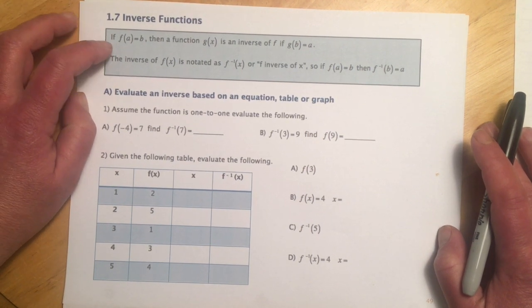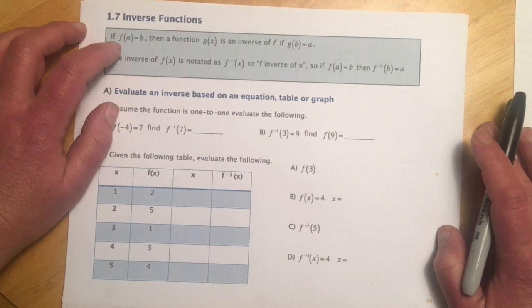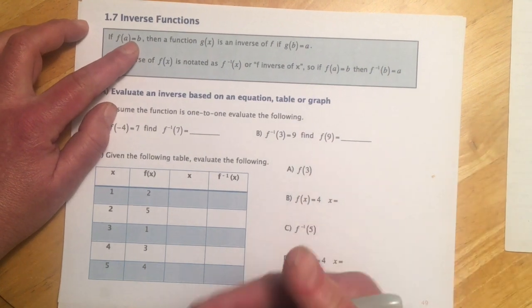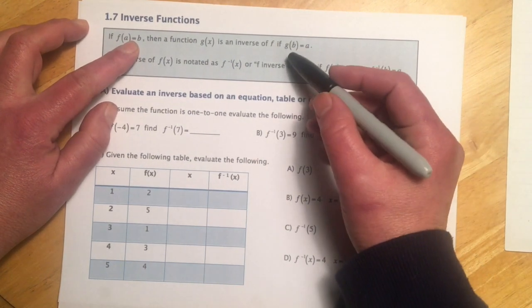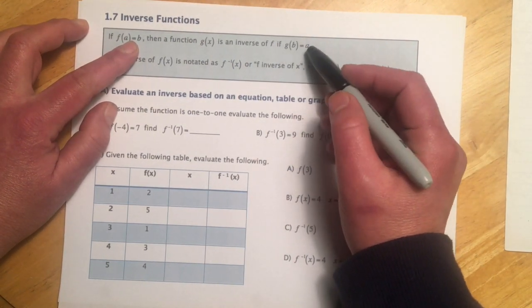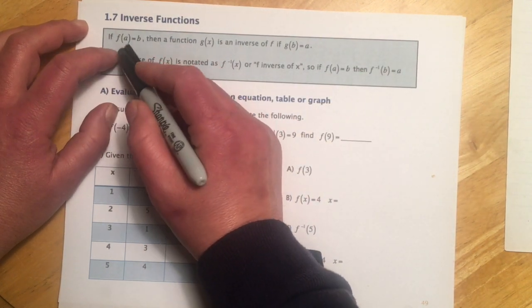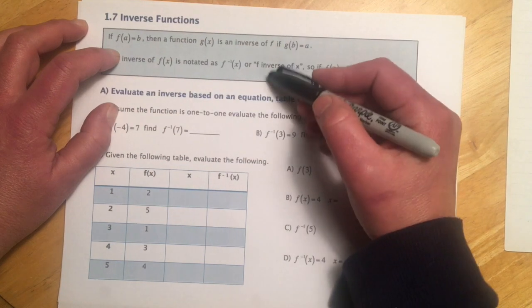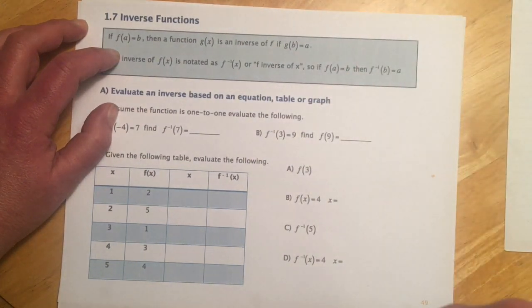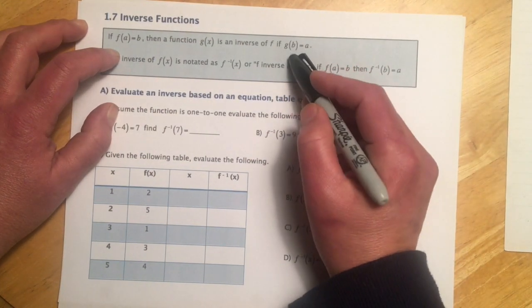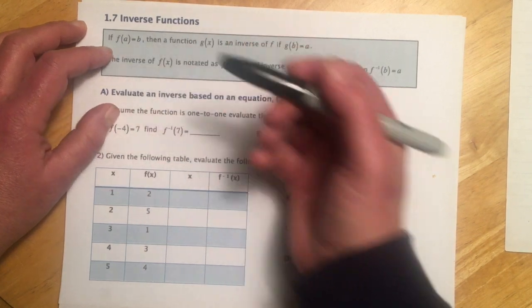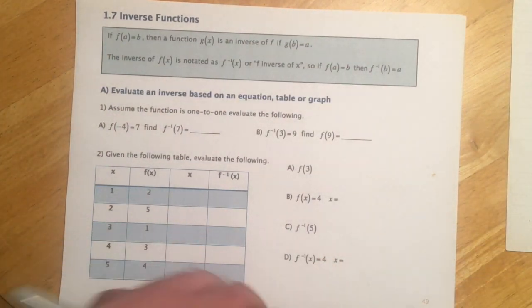So basically, if we have a function and we put in a and we get out b, so f of a equals b, if this function has an inverse, then it's going to go g of b equals a. So in other words, here I'm putting in a value, I'm putting in a and I'm getting out b. Here, when I put in b, I get back a. So it's kind of the secret decoder ring for the function. It's actually just everything's opposite. The x's and y's have swapped places.